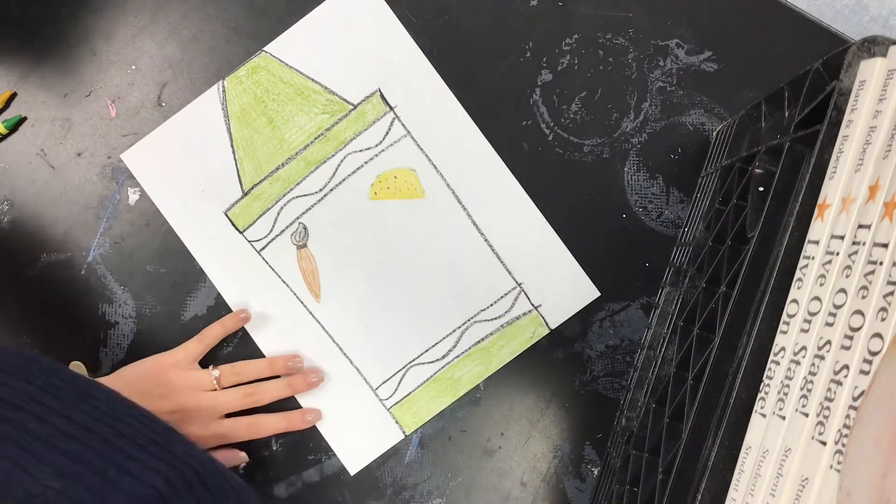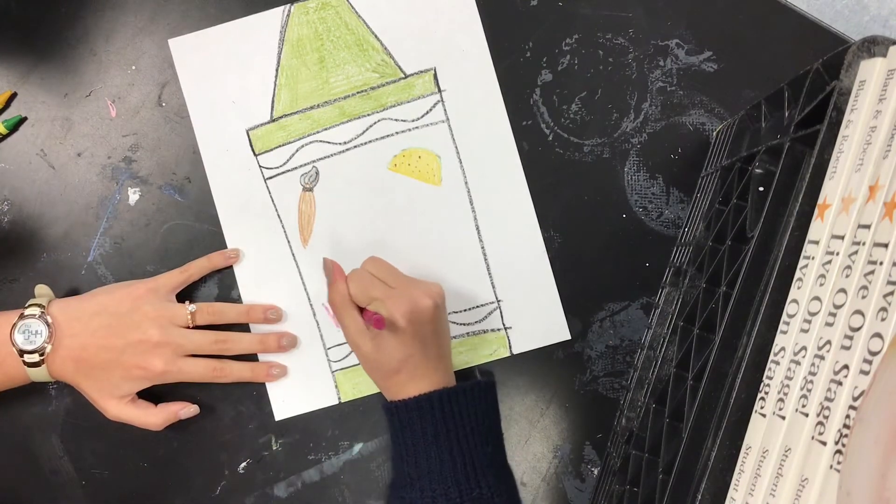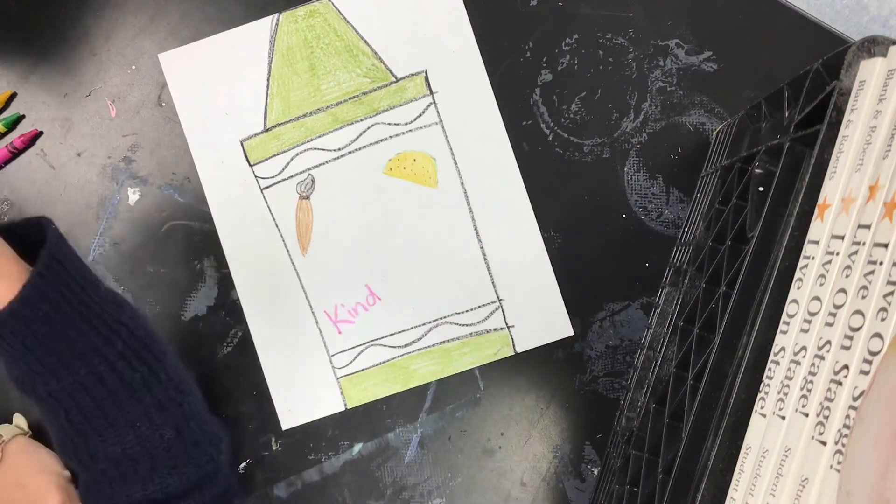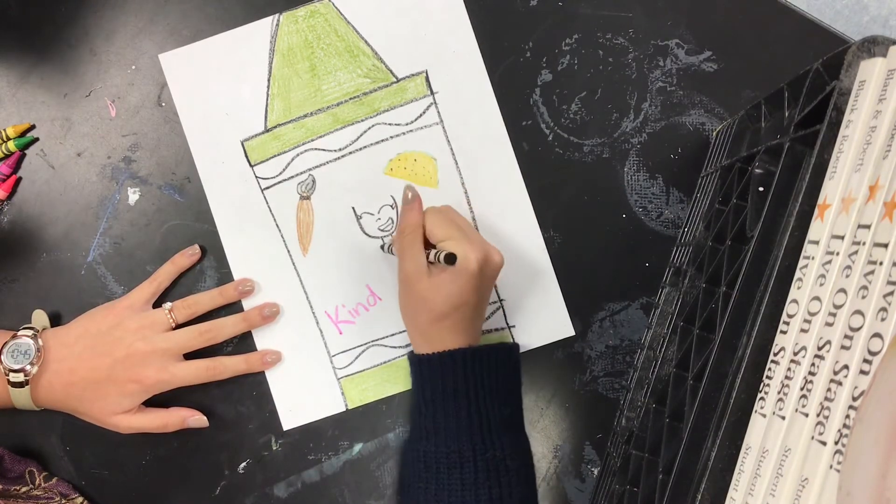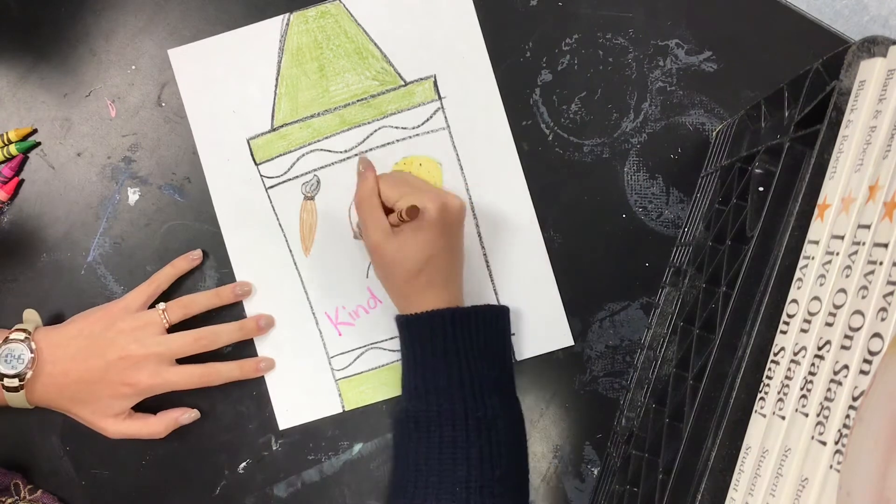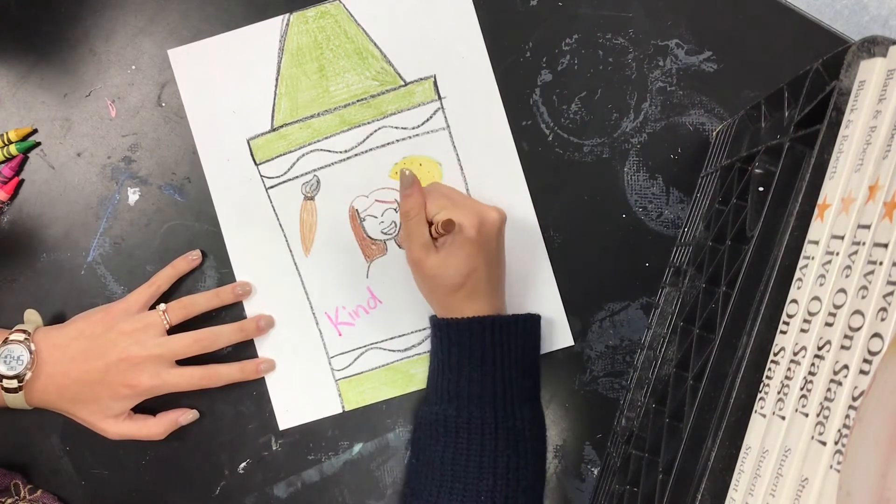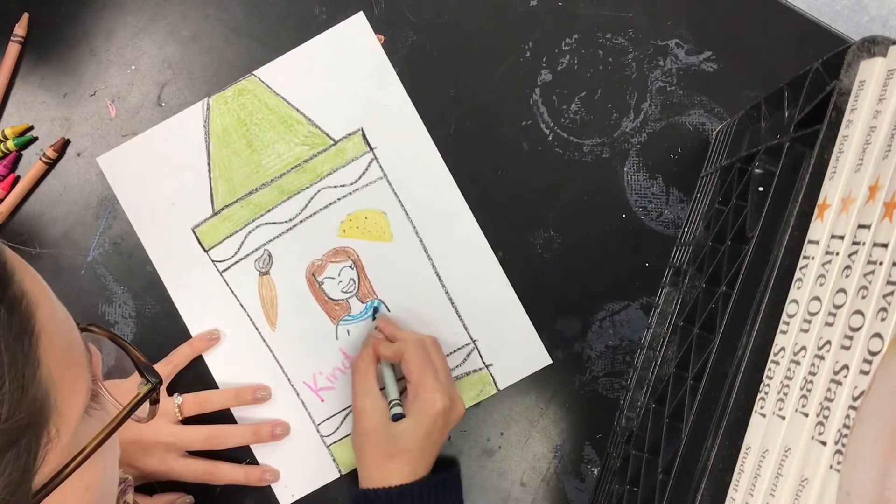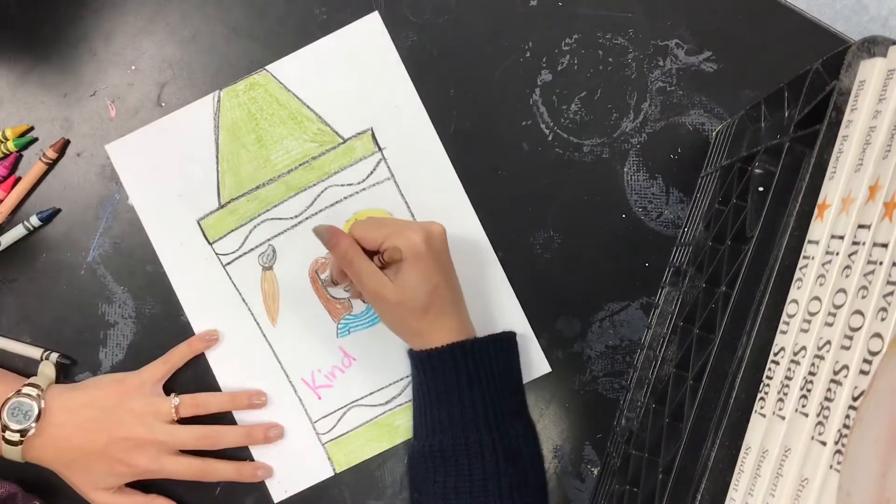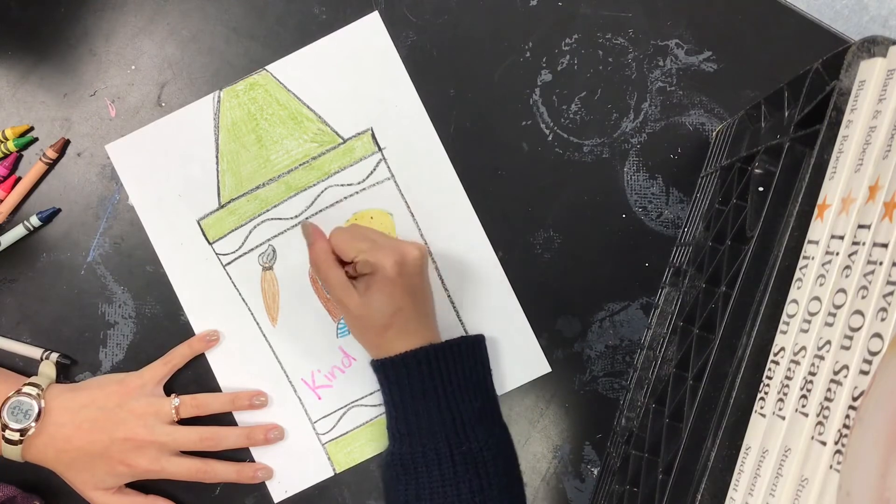I already know your favorite color because that's what you colored your crayon with. What are some other things that you think are important and all about you? Fill that middle part of your crayon up with everything. Don't forget to write your name at the top. And I can't wait to see your all about me crayons.